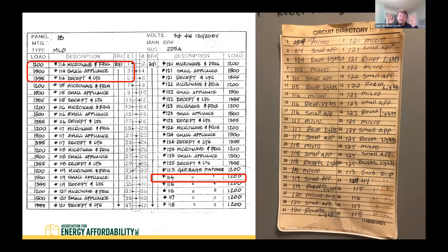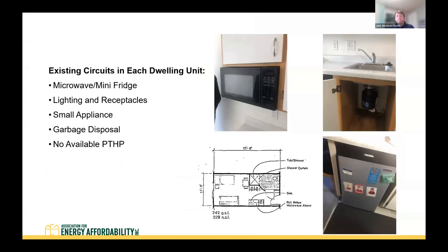Looking at the panel schedule from one of the hallway sub panels, there is no available space for additional circuits. What's highlighted in red is a single dwelling unit's circuits: a microwave and fridge circuit, a small appliance circuit, receptacles and lights, and a garbage disposal circuit. Every unit has only four circuits and no available circuit for a package thermal heat pump. Triggering panel upgrades would represent significant cost to the project.